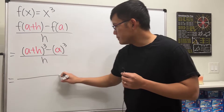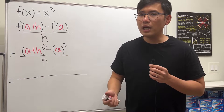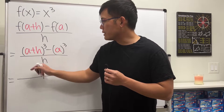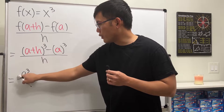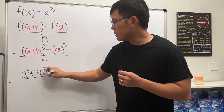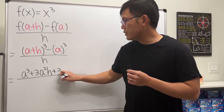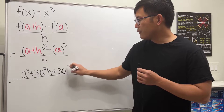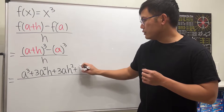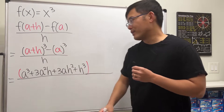For the third power expansion, remember the coefficients are 1, 3, 3, 1. If you need help with expanding higher powers, check out that video. We start with a to the third, then 3·a²·h, then 3·a·h², and finally h to the third. This is the full expansion of (a+h) to the third power.